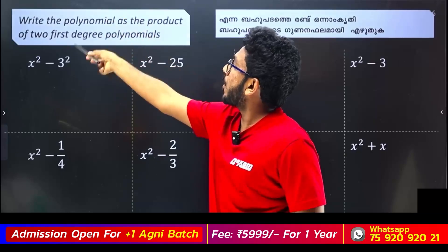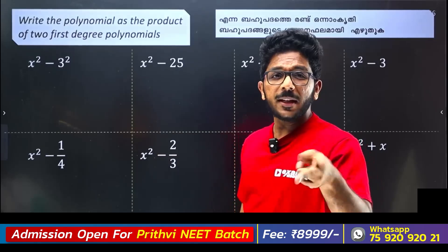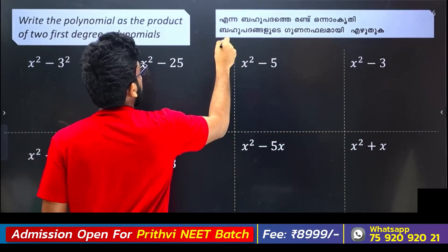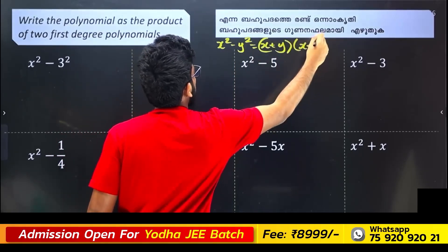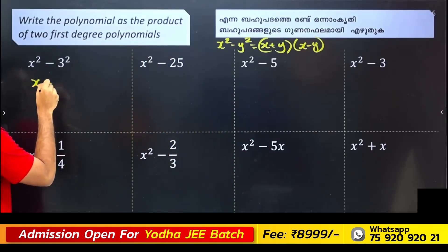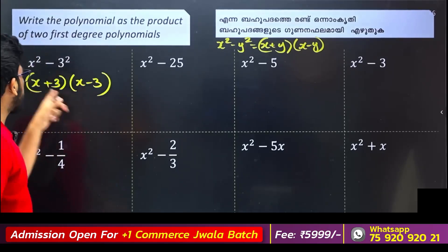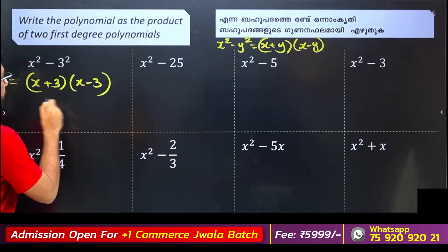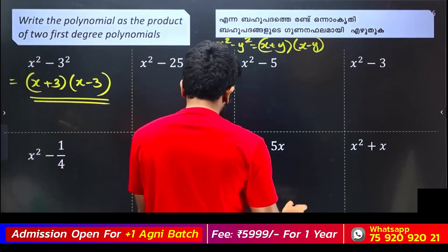Write the polynomial as the product of two first-degree polynomials. The formula is x squared minus y squared equals x plus y into x minus y. So, x squared minus 3 squared equals x plus 3 into x minus 3. This gives us two first-degree polynomials as a product. x squared minus 3 squared equals x plus 3 into x minus 3.